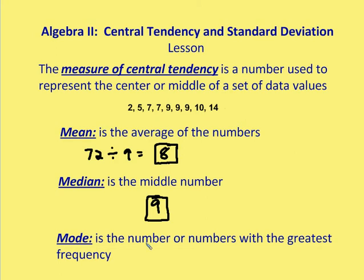The mode is the number or numbers with the greatest frequency. Looking at the set, 9 appears most often, so the mode is 9. If we had three 7s and three 9s, the mode would be both 7 and 9. And if all numbers occurred at the same frequency, there would be no mode.